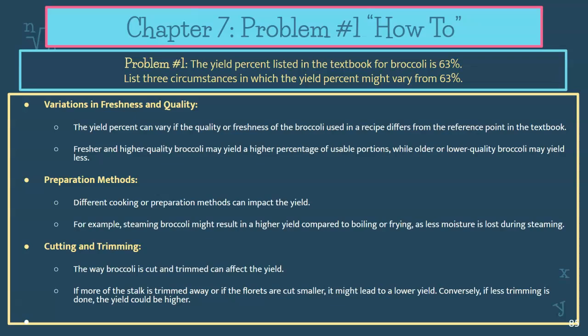The second factor is your preparation method. Preparation methods vary and will impact the yield and the finished product. For example, if you steam broccoli, you're going to have a lot more consumable broccoli than if you boil or fry it, because there is less moisture loss when you steam — it's like eating fresh broccoli.